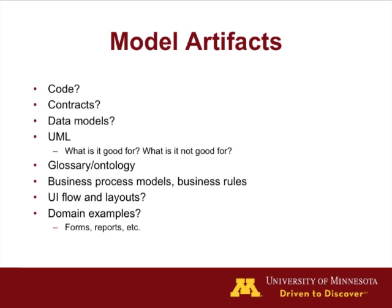UML is good for representing relationships among things but often not good for illustrating complex sequences or flows of information — data flow diagrams might be a better choice for that. It's important to include a glossary or ontology in the domain model to get general agreement on what certain terms mean. For example, words like 'itinerary' and 'leg' — we each have our own intuitive notion of what those mean, but our intuitions might differ, so it's important to discuss those differences and agree on a standard definition. UI and domain artifacts such as forms, slips, and receipts could also be included.